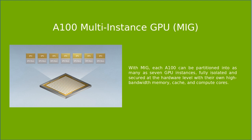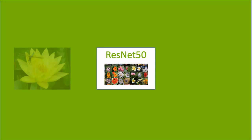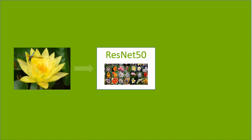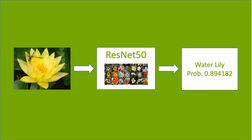MIG is a new feature of the NVIDIA Ampere architecture. Each inference job consists of hosting a trained ResNet-50 model in either a whole GPU or MIG instances, taking a flower image from the dataset, and predicting a label of the flower and a corresponding probability.